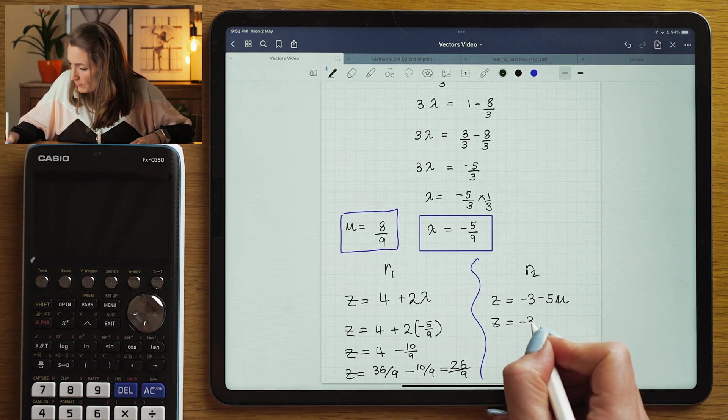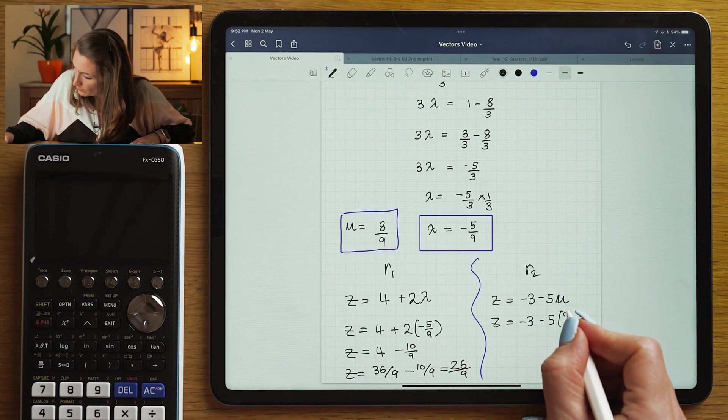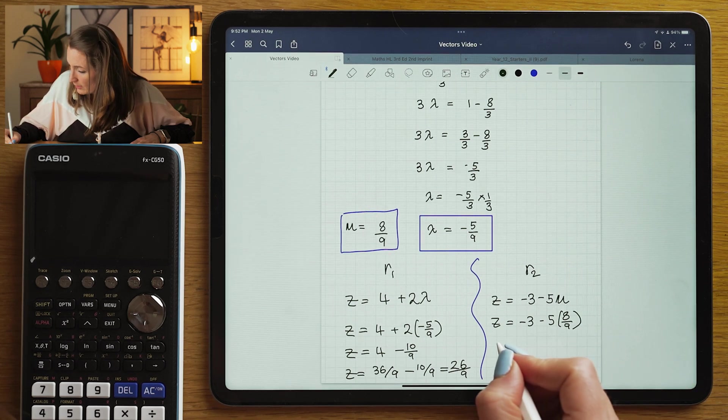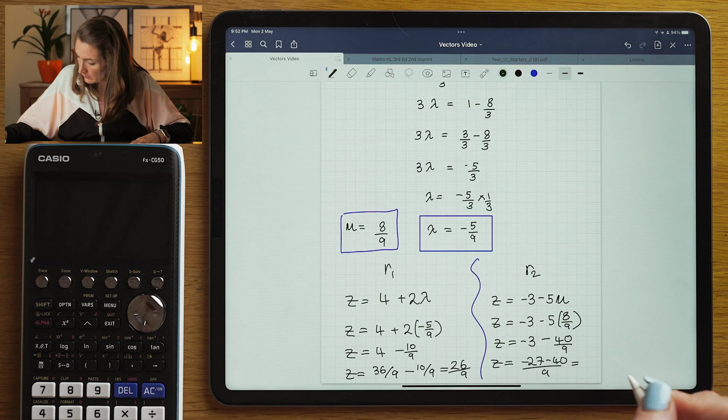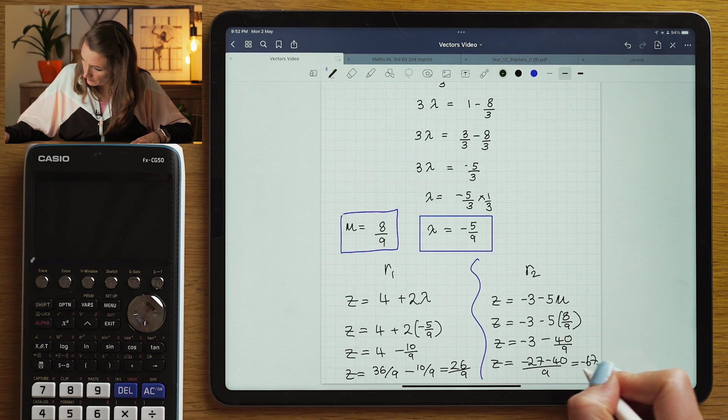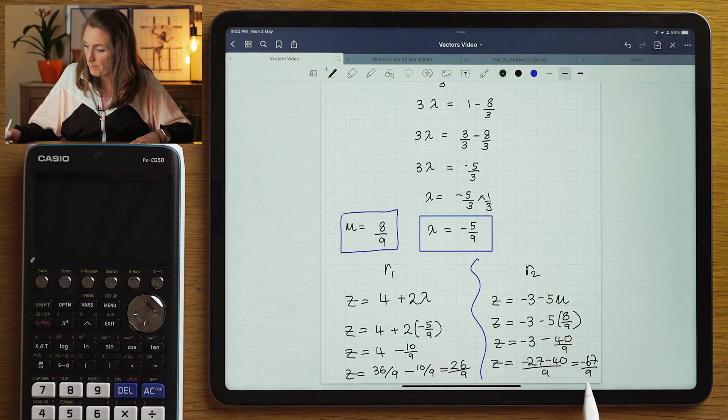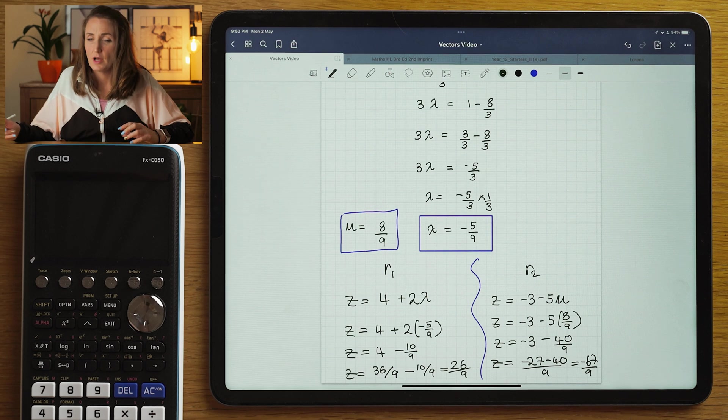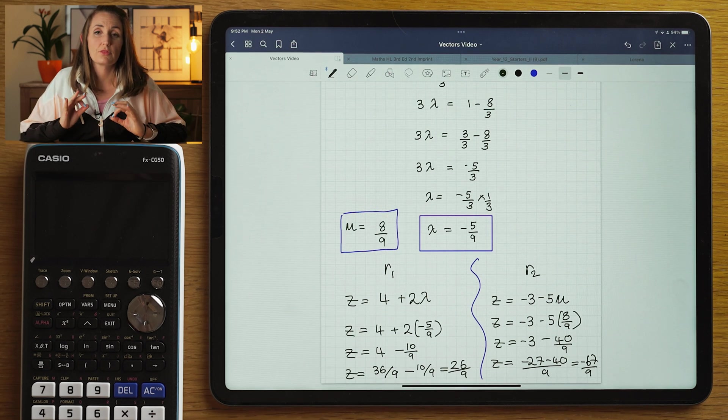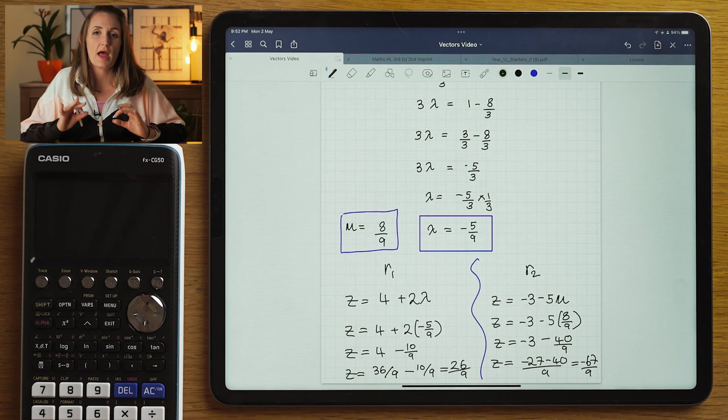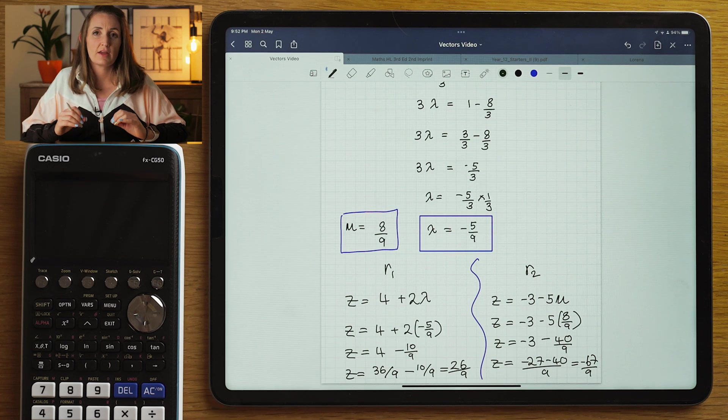And if I solve here, I would put in 8 over 9. And this one I would get minus 67 over 9. So you can see that when you go to that third equation with the lambda and the mu, you're going to get a z value that doesn't agree.